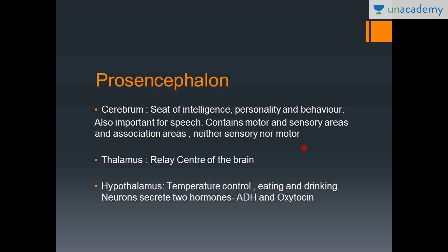The hypothalamus is where you have the temperature control, eating and drinking centers, and there are two hormones secreted by neurons of the hypothalamus. The posterior pituitary secretes ADH and oxytocin, but the neurons for these two hormones are actually in the hypothalamus. The hormones are carried from the hypothalamus to the pituitary, and from the pituitary they are secreted into the blood. The hypothalamus is also the thermostat of the body — it maintains the base level at which the temperature is to be maintained.